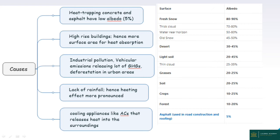Water vapors and greenhouse gases like carbon dioxide and chlorofluorocarbons from factories and industries contribute to the greenhouse effect. Deforestation is a self-destructive process — urbanized and industrialized areas lead to deforestation. For example, the Aarey forest in Mumbai was cleared — this is a relevant case study. Lack of rainfall hence causes heating, and more heating effect will be pronounced.